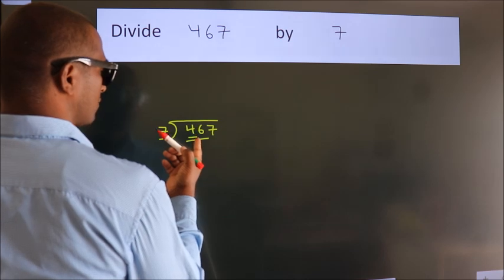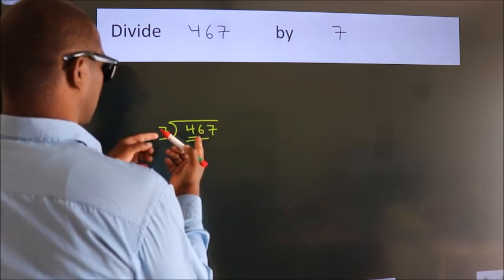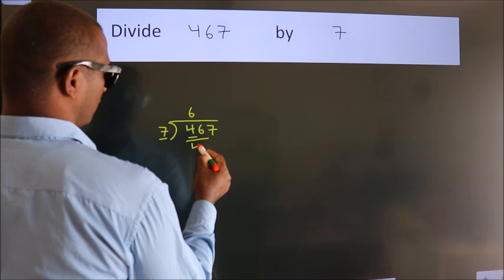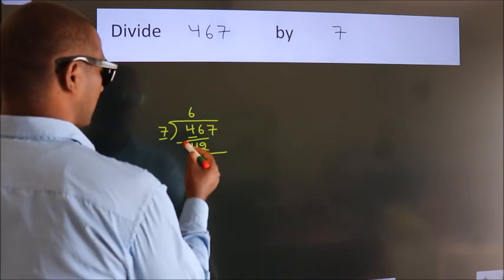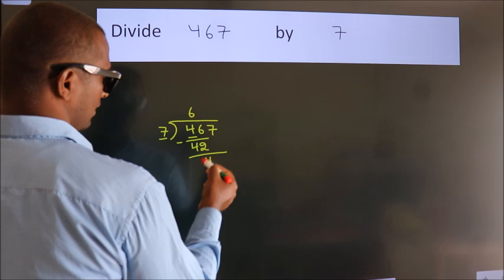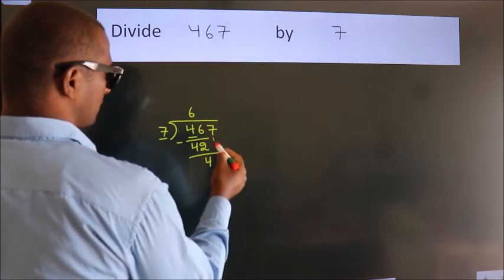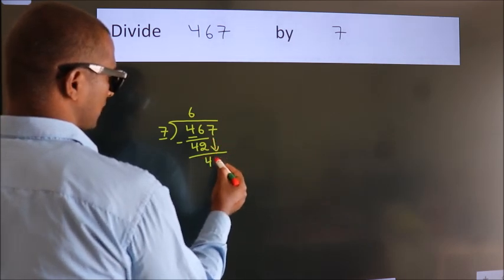A number close to 46 in the 7 table is 7 sixes 42. Now we should subtract. We get 4. After this, bring down the beside number. So, 7 down.